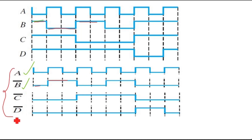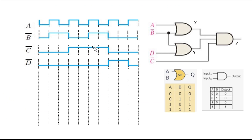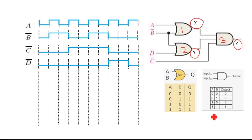This is our new input waveform that we will use for the output calculations. Looking at the circuit, I label the first OR gate output as x, the second OR gate output as y, and the AND gate output as z. As I mentioned in my previous video, to get an error-free output waveform it is better to draw a truth table beside the waveform.